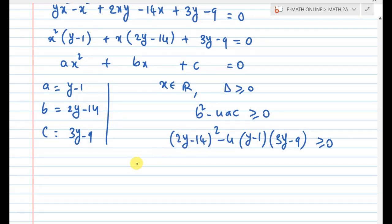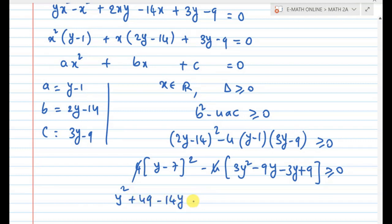Taking 2 common outside: 4 times (y minus 7) whole square minus 4 times (y minus 1) times (3y minus 9). Expanding: 4 times (y squared minus 14y plus 49) minus 4 times (3y squared minus 9y minus 3y plus 9). This gives 4y squared minus 56y plus 196 minus 12y squared plus 36y plus 12y minus 36 greater than or equal to 0.